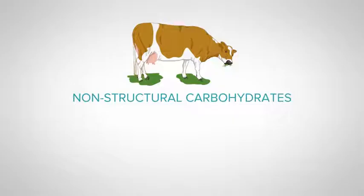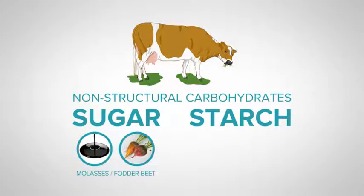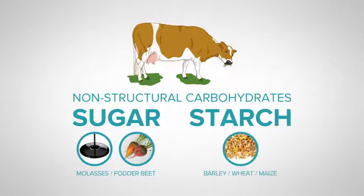So, let's move on to look at what happens when a cow eats feeds that are high in non-structural carbohydrates, so that's the sugars and the starches. Feeds high in sugar include molasses and fodder beet, while feeds that are high in starch include cereal grains such as barley, wheat or maize.